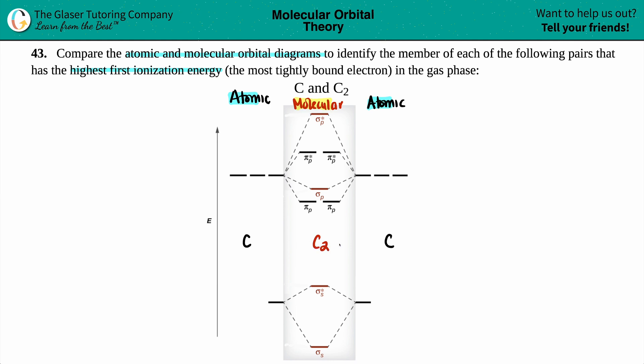Now the hardest part here is to just know how many total valence electrons, because once you know the valence electrons, you can plug in your electrons into this diagram. So we look on the periodic table, carbon is in group 4a or 14, which means that it has four valence electrons. And that's for each carbon.